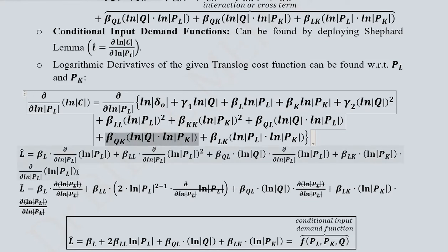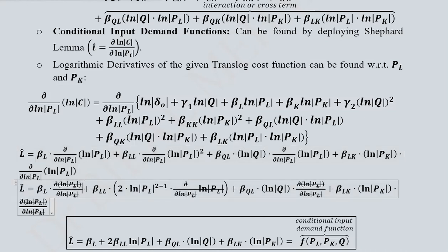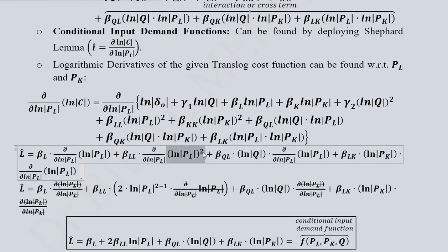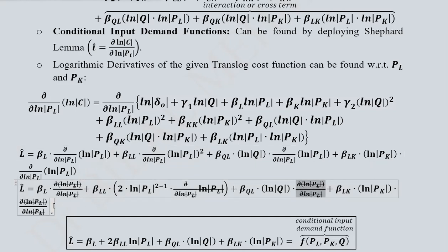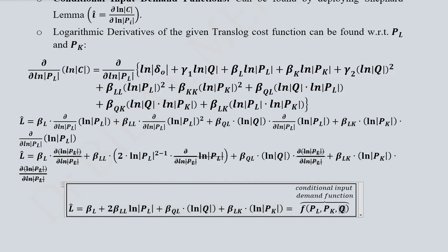You can pause the video and check this differentiation — it is quite similar to what was done in the previous videos on the translog production function. Cancellations will happen, and the power rule will be applied just as before. This gives us a simplified form of the conditional input demand function for labor, which depends on the price of labor, the price of capital, and output. Since output appears as one of the determining variables, it is known as the conditional input demand function.